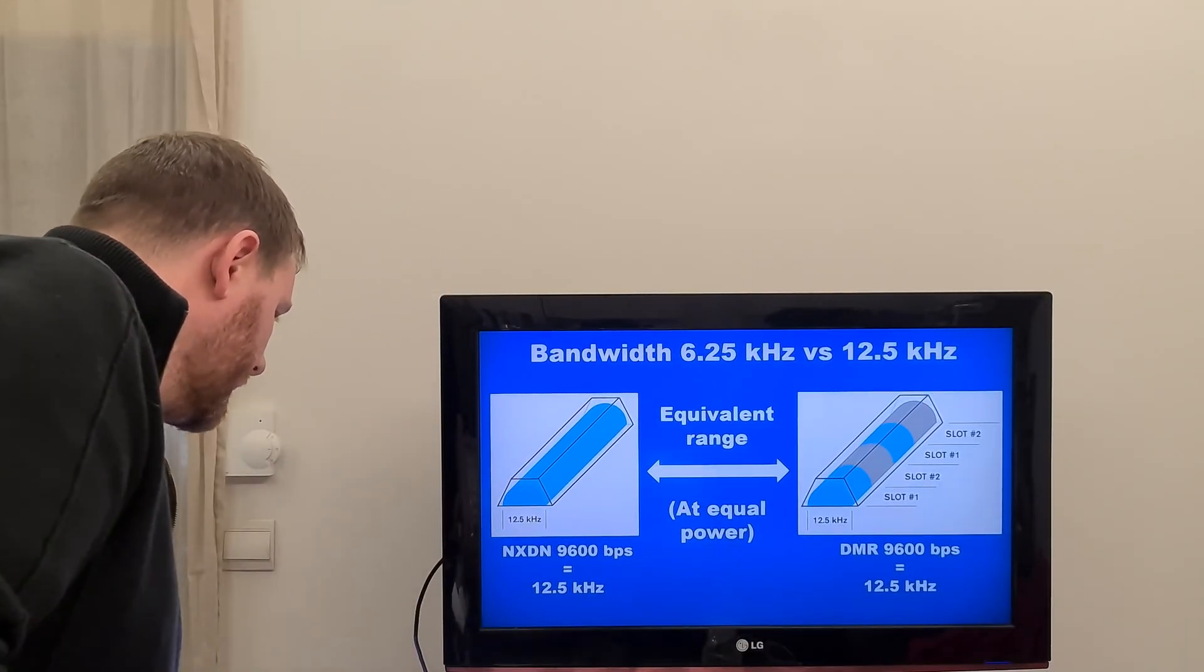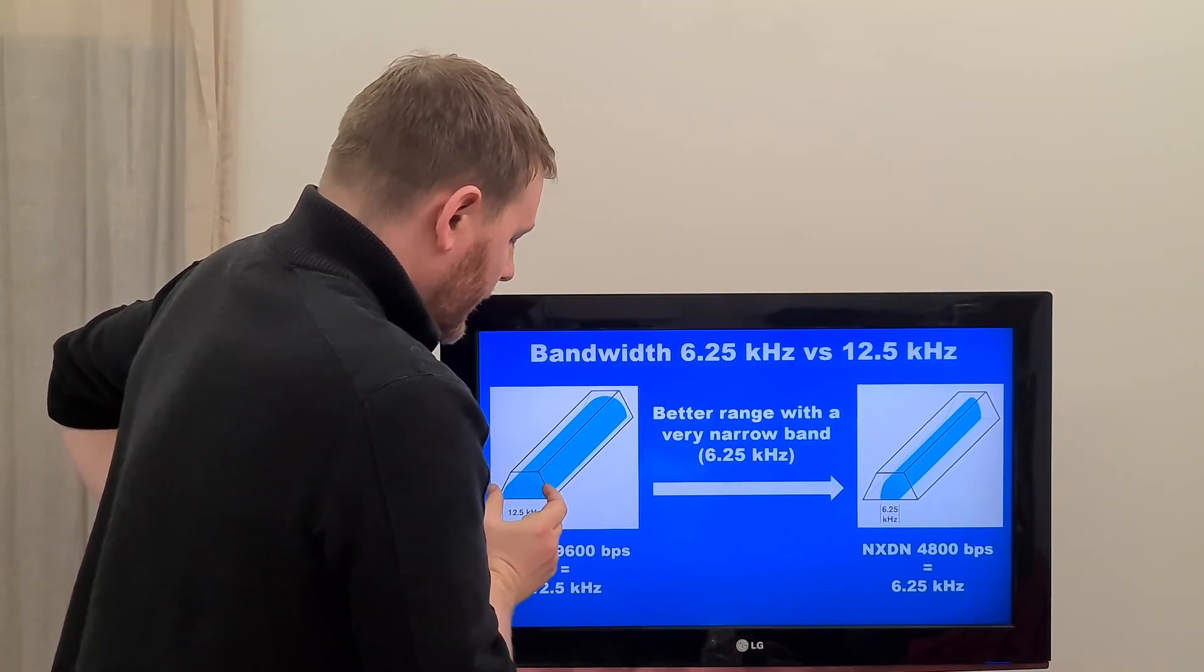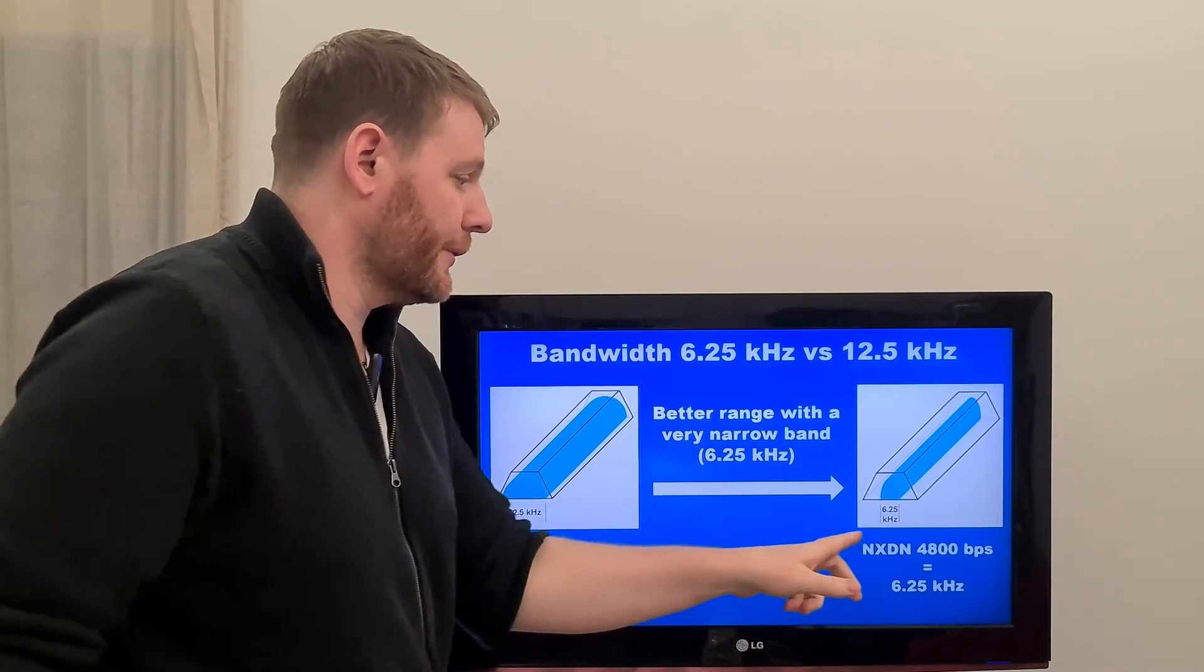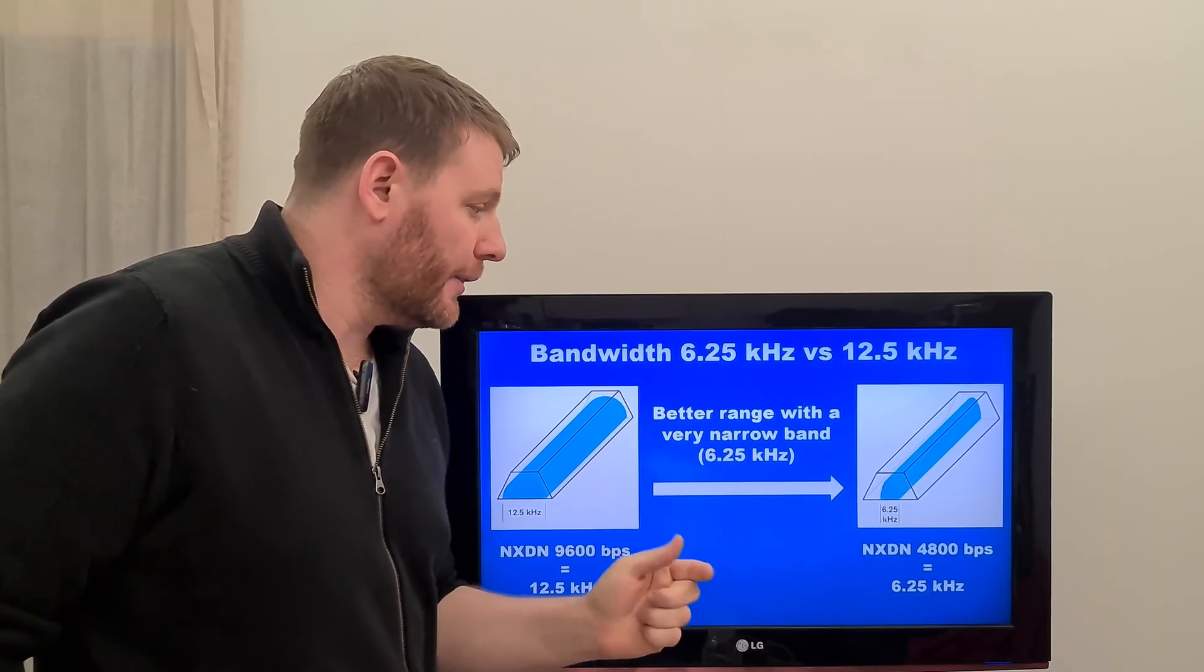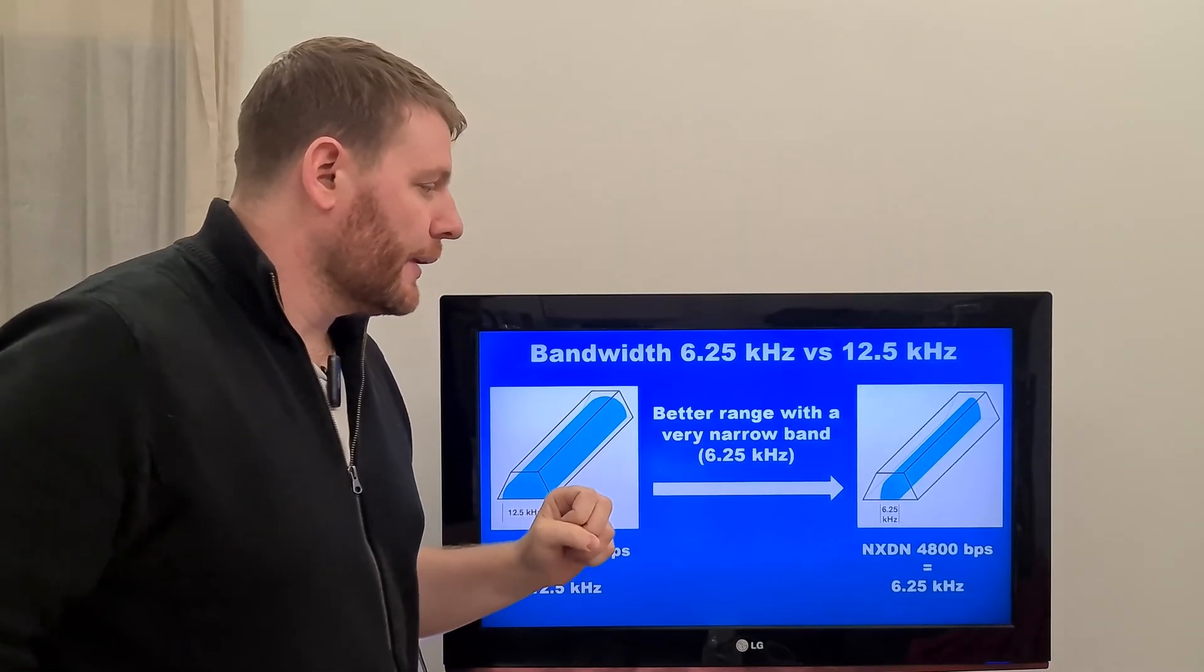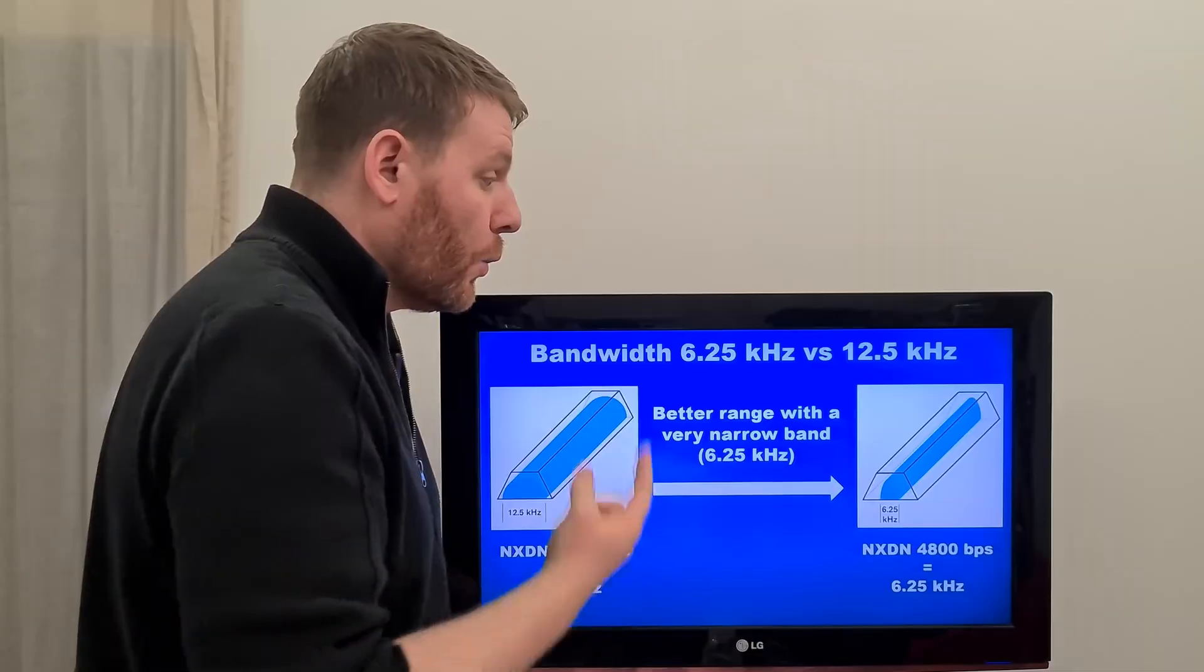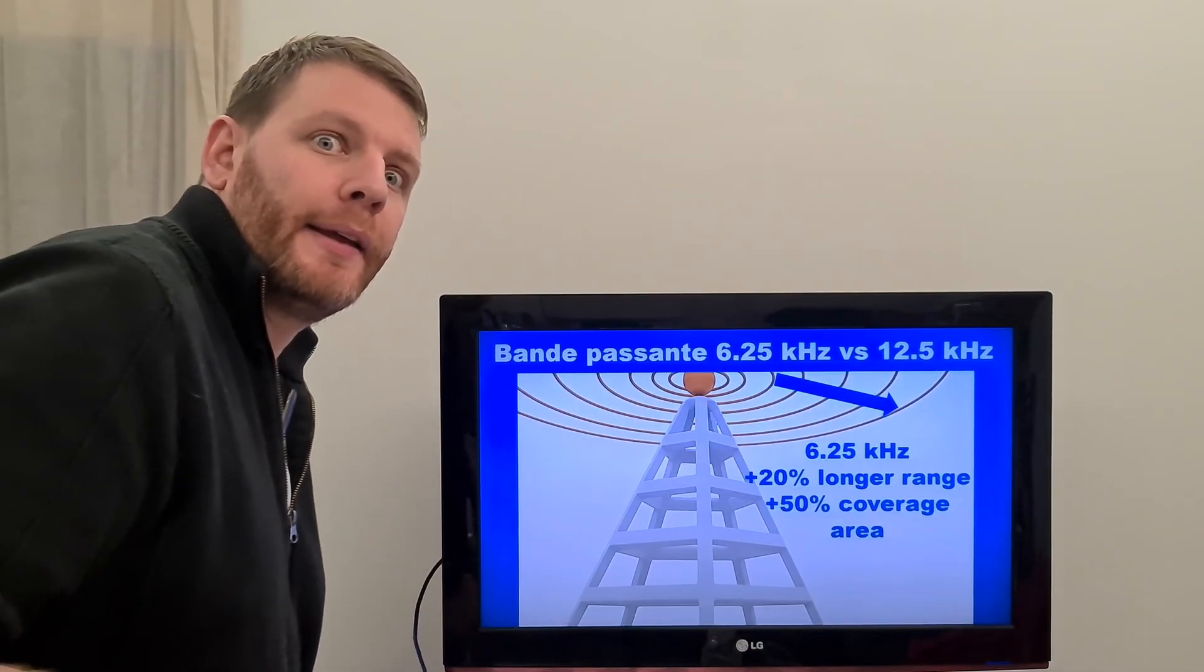Now, if you use NXDN with a half bandwidth than the NXDN 9.6 kilobits per second, if you use only 6.25 kHz of bandwidth, the very, this is called the very narrow band, the range, the coverage range is better. Why? Why is it better? I will explain it now.